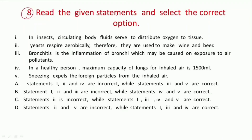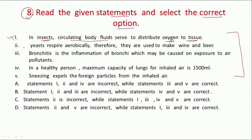This is Question 8: Read the given statements and select the correct options. First — in insects, circulating body fluid serves to distribute oxygen to tissues. Yeh statement incorrect hai. Insects ke andar spiracles hote hain, unke bodies mein, wahan se oxygen enter karti hai, aur body ke andar respiratory tubes hote hain jinko trachea kehte hain — wahan se sabhi tissues tak oxygen pahunchti hai.